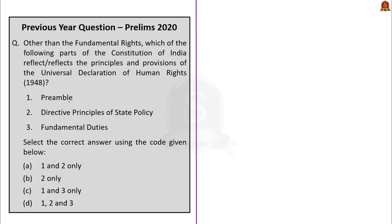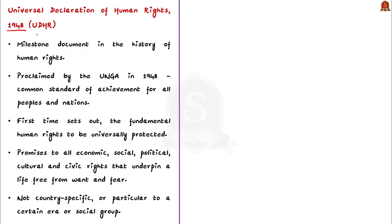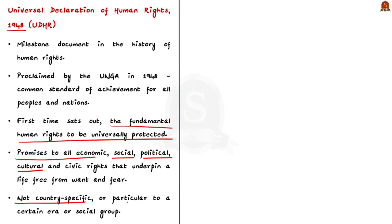UDHR was proclaimed by United Nations General Assembly in 1948, around the same time when our constitution was being drafted. The declaration for the first time sets out the fundamental human rights to be universally protected. It promises economic, social, and political rights to everyone. The rights have a universal character transcending political boundaries. In a nutshell, UDHR is a document that acts like a global roadmap for freedom and equality by protecting the rights of every individual everywhere.